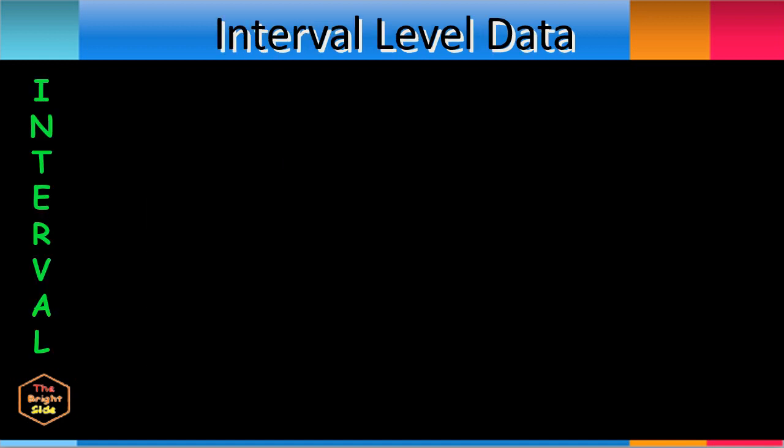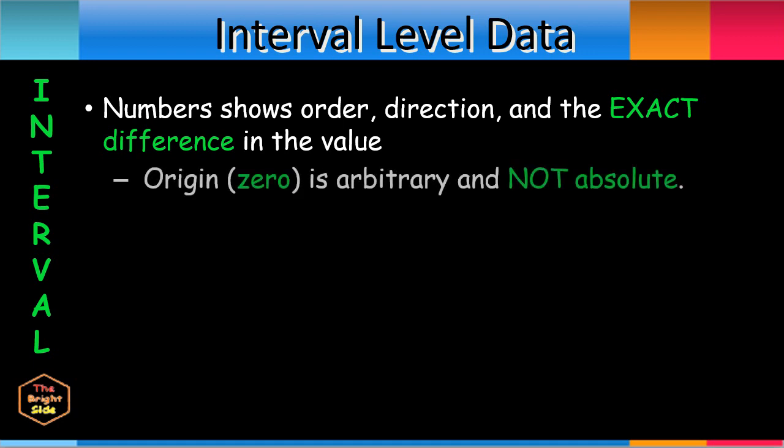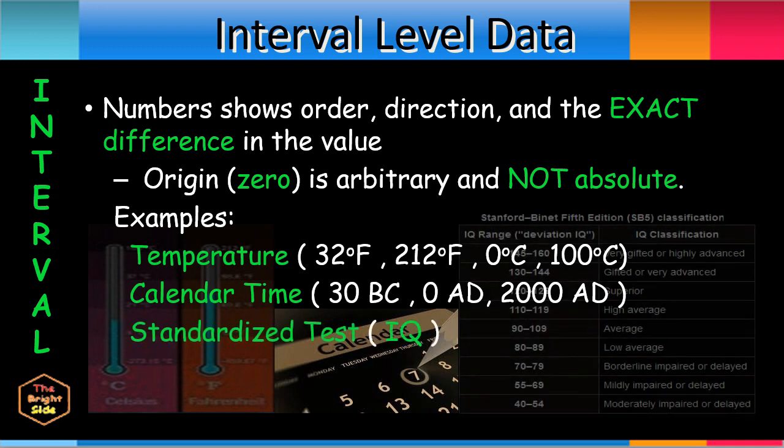Interval level data numbers show the order and direction, and they also show the exact difference in the value. Also, the location of origin, or the zero, is arbitrary and not absolute. Some examples include temperature, calendar time, and standardized tests which will have interval level data. Notice that the differences between the values are exact, and all of these do not have absolute zero.